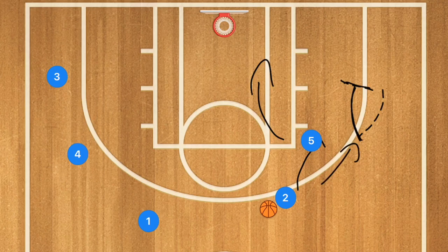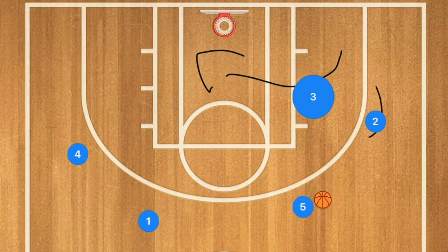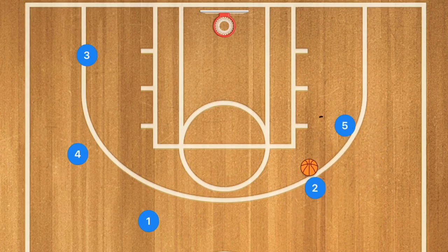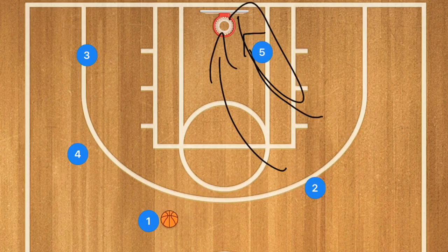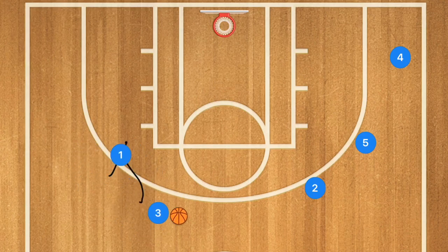Instead of a pass and a screen, we're going to have a dribble handoff. Player five would still have the ball, player two pops off the screen, player three rolls across, and player five hands off to player two. Player five then rolls towards the basket. If there are open lanes, you take it; if not, player two passes over to player one. This is a continuity offense, which means it's basically a motion offense — you're going through the same motions after the initial setup over and over again.